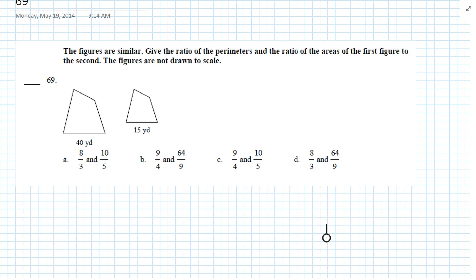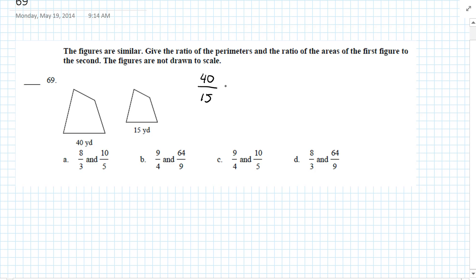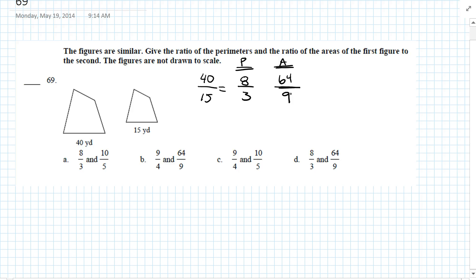Question 69: The figures are similar — give the ratio of the perimeters and the ratio of the areas of the first figure to the second. The perimeter ratio is just the ratio of side lengths: 40 to 15. That simplifies — 5 goes into 40 eight times, 5 goes into 15 three times — so the perimeter ratio is 8 to 3. To find the area ratio, square each number: 8 squared is 64, 3 squared is 9. So area ratio is 64 to 9. Answer is D.